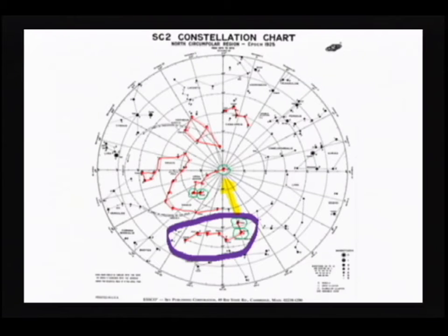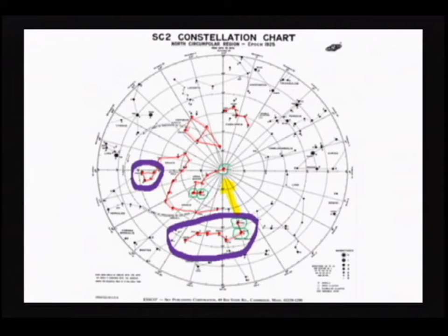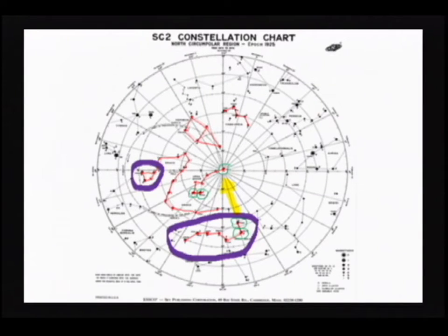So I've got Big Dipper, I've got the Pointer Stars, I get to Polaris. Now I'm going to find the head of Draco the Dragon. You can see that red constellation that goes between the Big Dipper and the Little Dipper and kind of slithers around there. Those four stars circled in purple are the head of the dragon — that's pretty easy to find. Once you find that, you can kind of backtrack toward the body of the serpent.